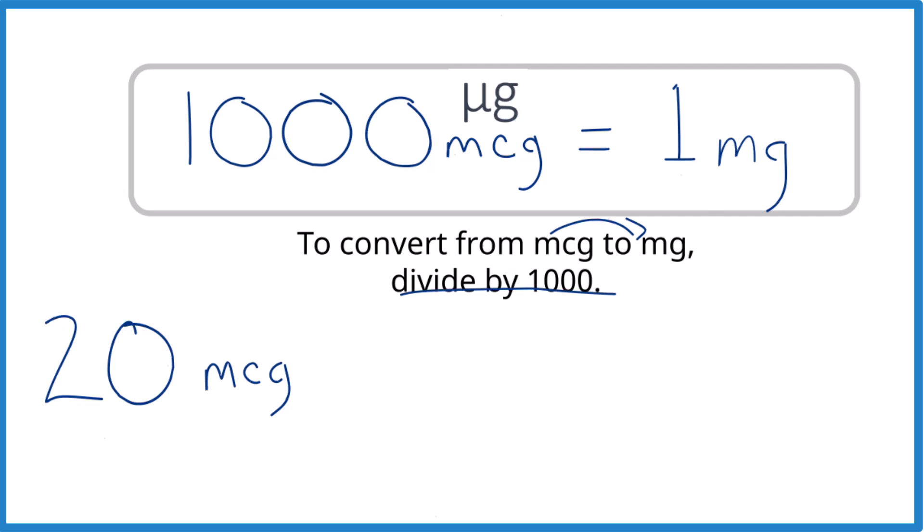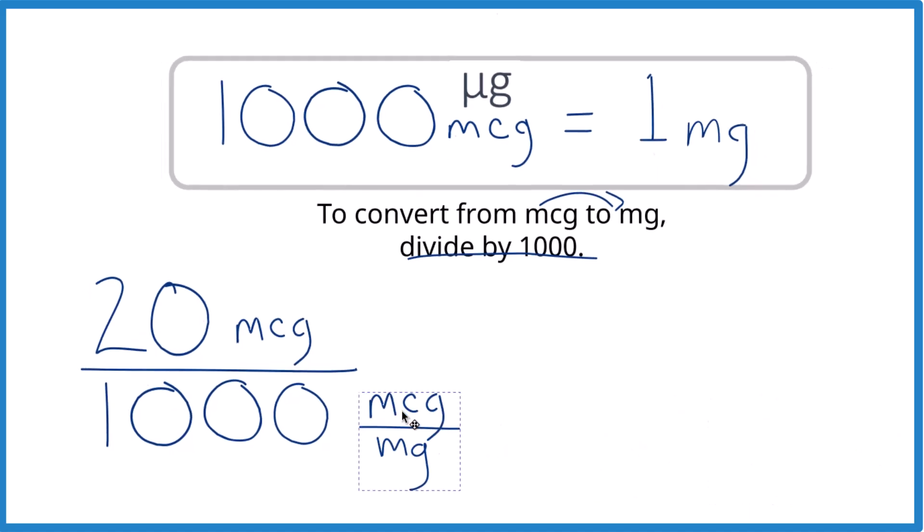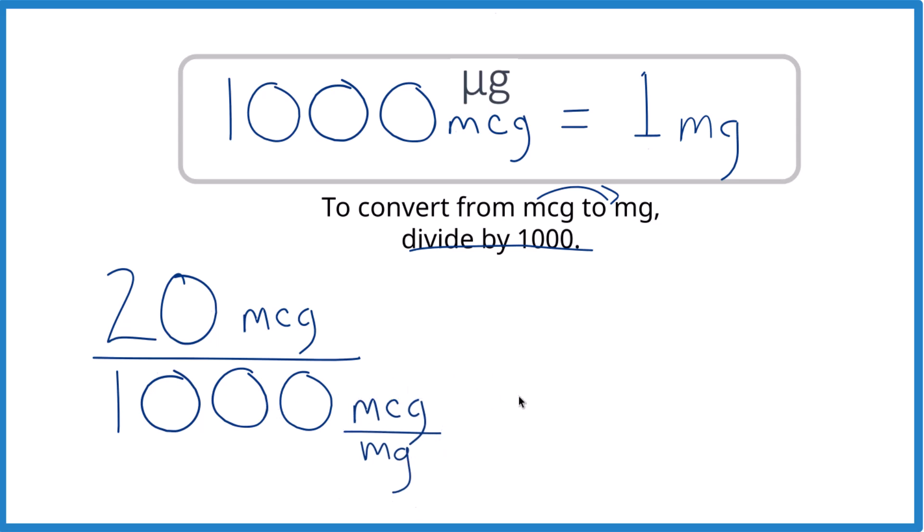So we take our 20, divide it by 1000. But remember, there are 1000 micrograms, 1000 mcg, in one milligram. So the units are microgram, 1000 micrograms per milligram.